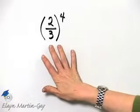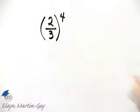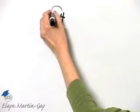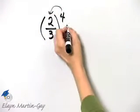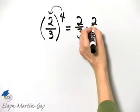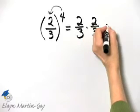Let's evaluate this expression. I have a fraction raised to the fourth power. Remember, this means four factors of two-thirds, so I'll simply write down two-thirds as a factor four times.